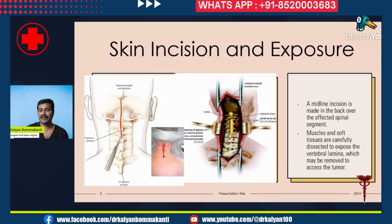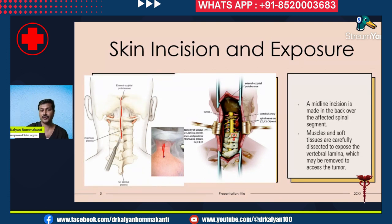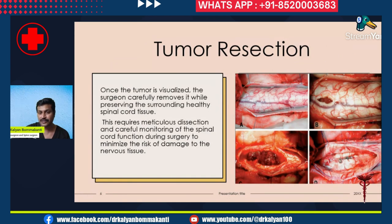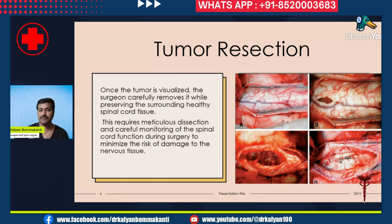After laminectomy, the spinal cord with the tumor comes into picture. For tumor resection, we open the dura mater — you can see the dural flaps which have been cut and pulled apart. This is a spinal cord tumor; you can see the tumor bulge.